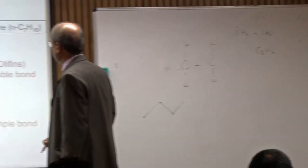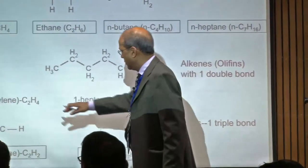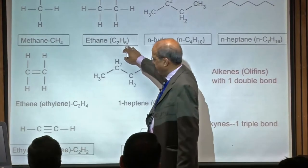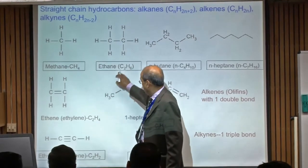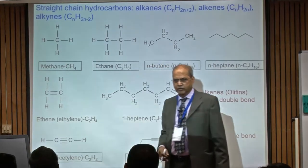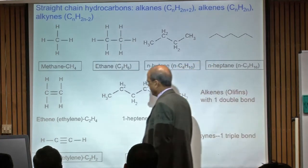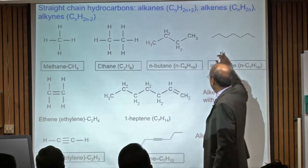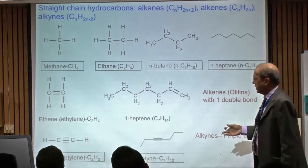Alkenes have a double bond between carbons — corresponding to ethane is ethene, which is called an unsaturated fuel because you can add more hydrogen. The nomenclature is consistent: if you have one double bond in heptane it's called heptene. These are alkenes or olefins. You can also have triple bonds — acetylene, also called ethyne, is an example. If there's one triple bond in heptane it's called heptyne — these are alkynes.